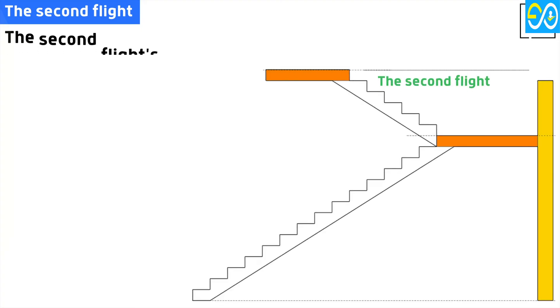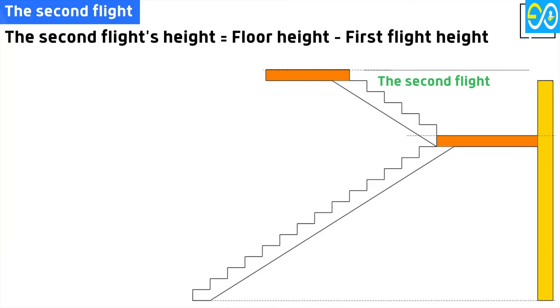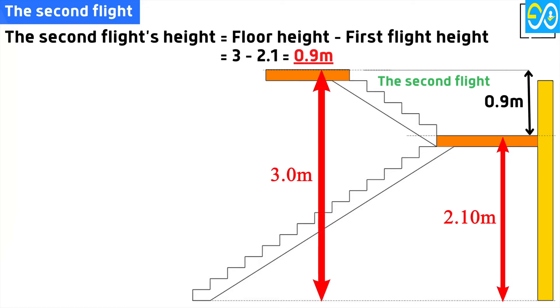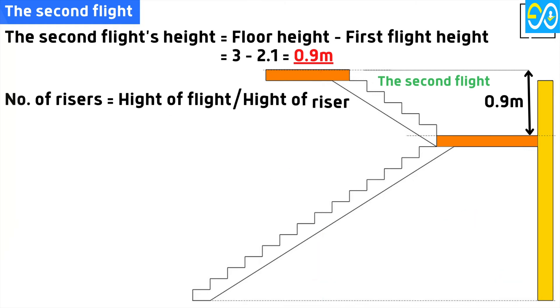Number two, the second flight. The second flight's height equals floor height minus first flight height equals 3 minus 2.1 equals 0.9 meters. Number of risers equals height of flight over height of riser equals 0.9 divided by 0.15 equals 6 numbers.